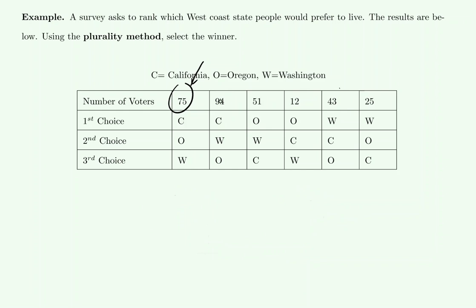Later we're going to look at ranked voting methods where the full ranking comes into play, but for majority and plurality voting methods they only concern themselves with people's first choice. At this point, this table is giving us a little more information than we need. For majority and plurality, you should only pay attention to the first row.